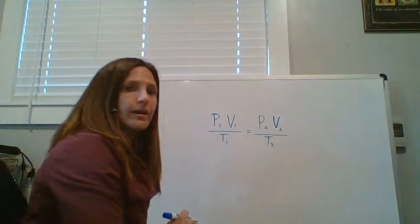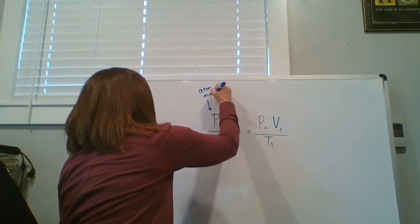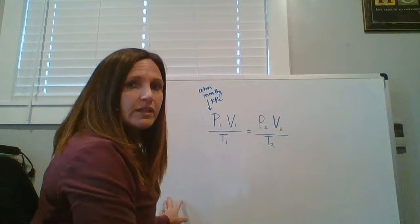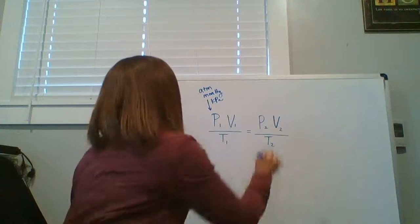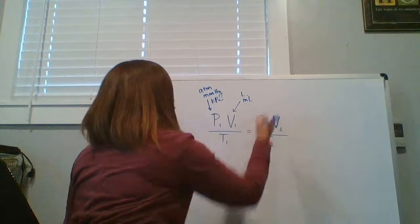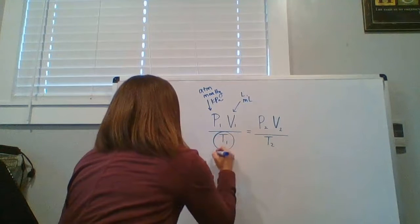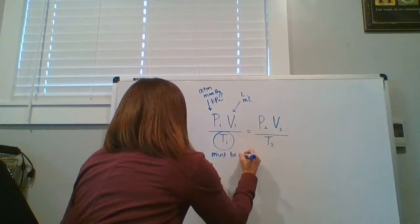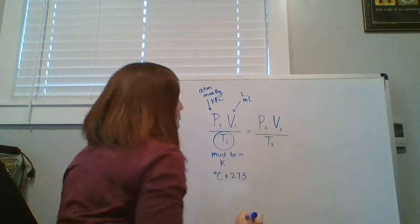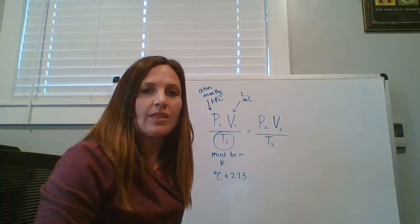As a reminder, our units for pressure can be ATM, MMHG, or KPA. Those are all perfectly acceptable pressure units. For volume, we're going to be in liters or milliliters. And for temperature, remember we must be in Kelvin. So that's degree Celsius plus 273 to get us into Kelvin.